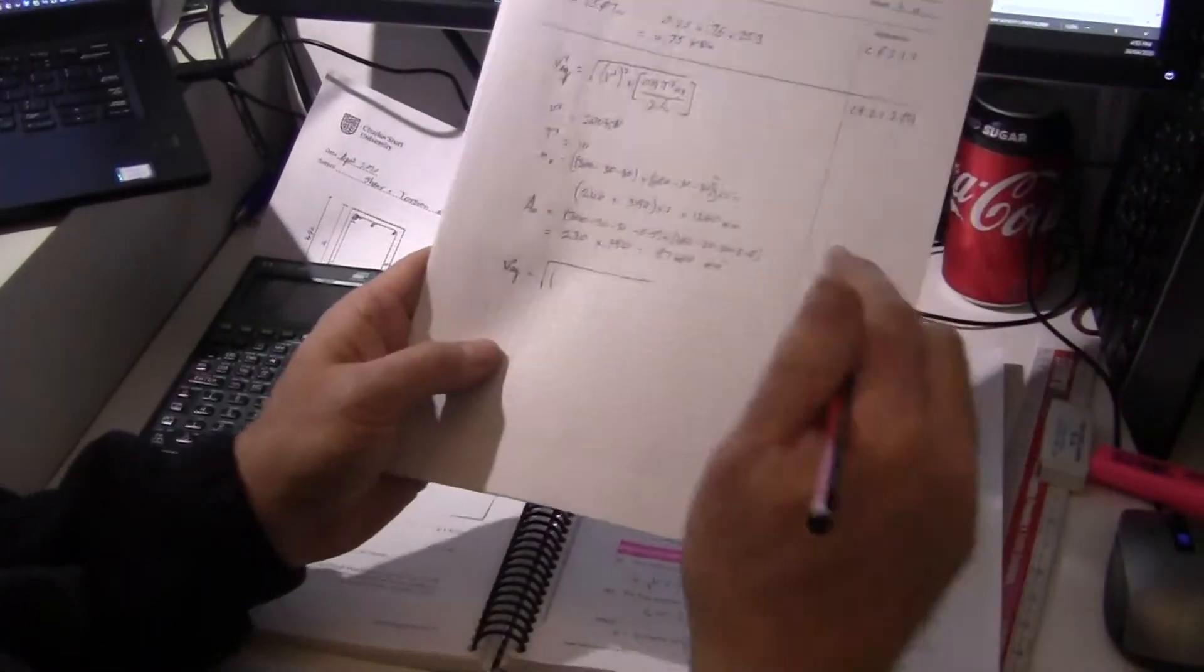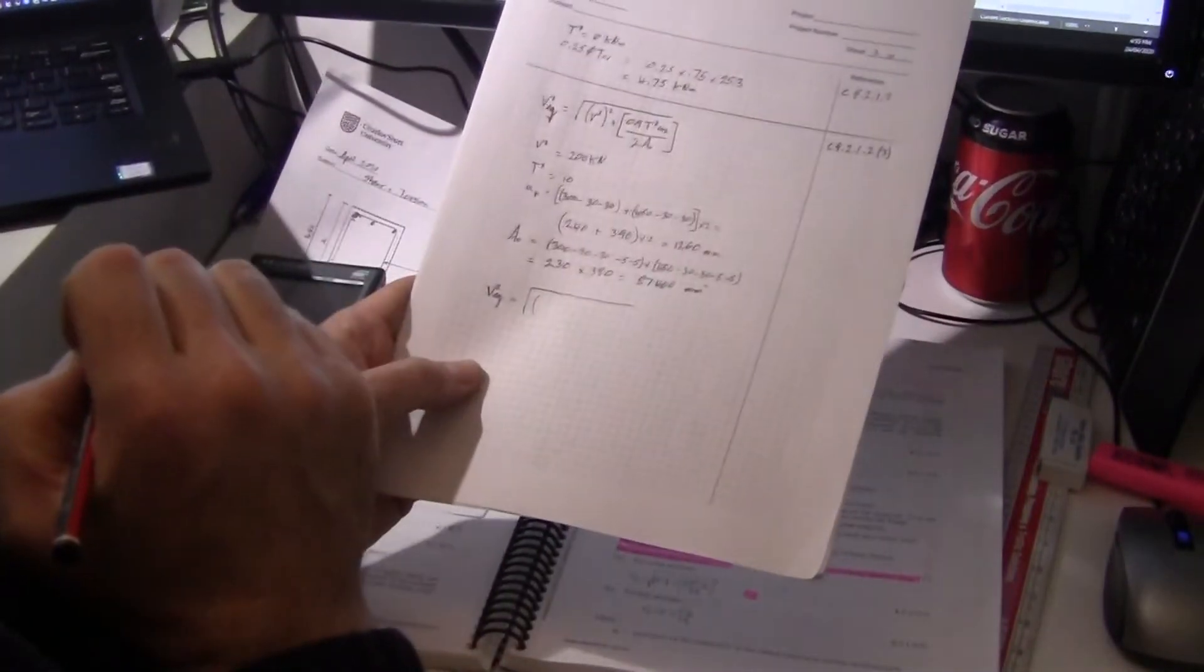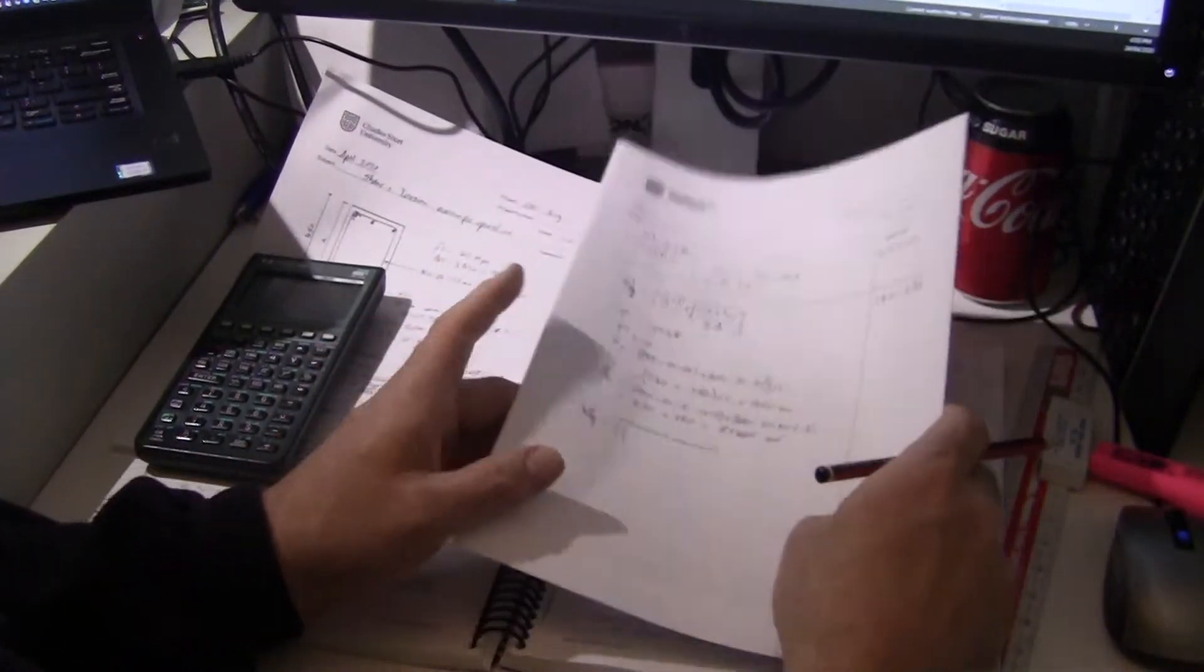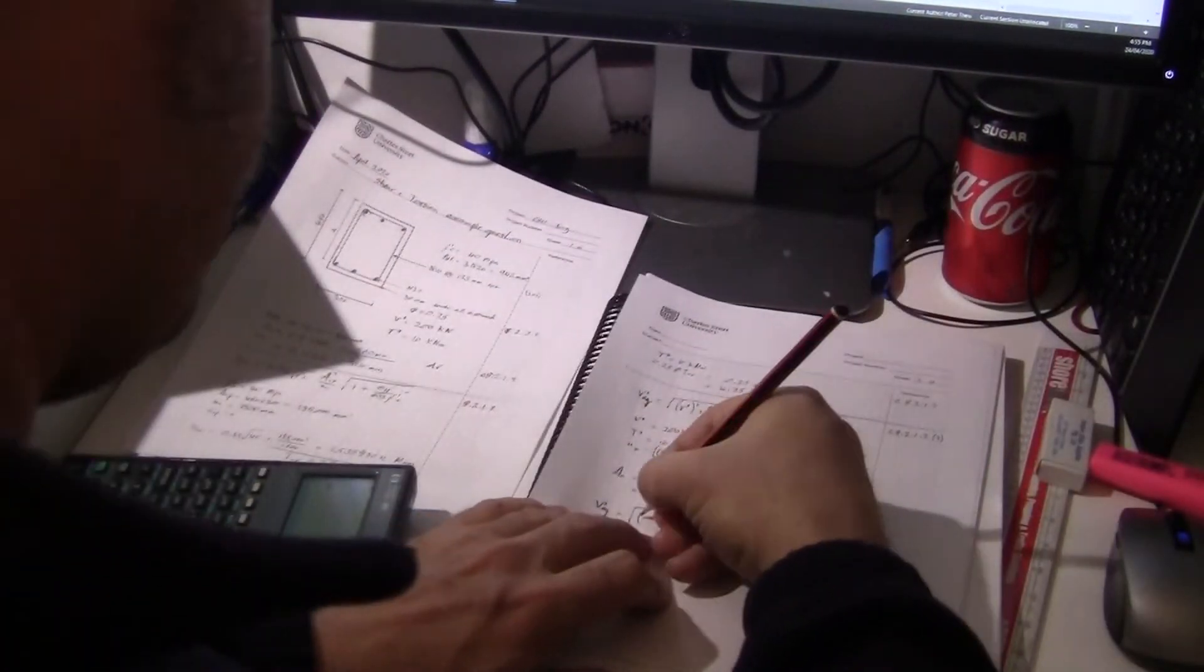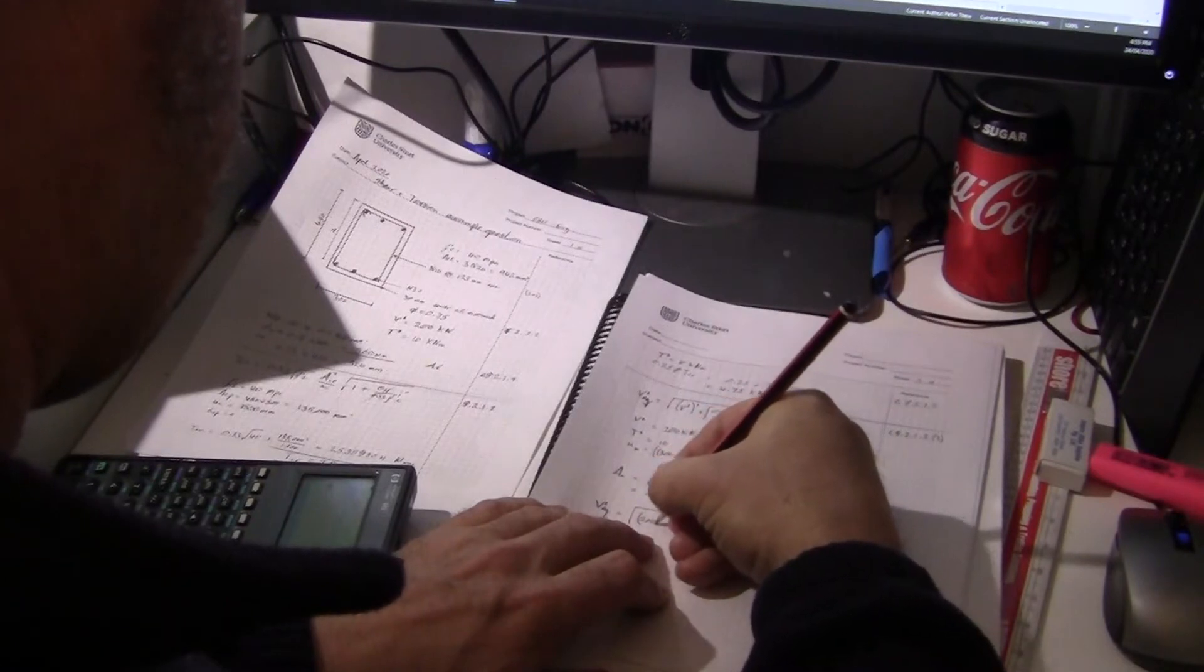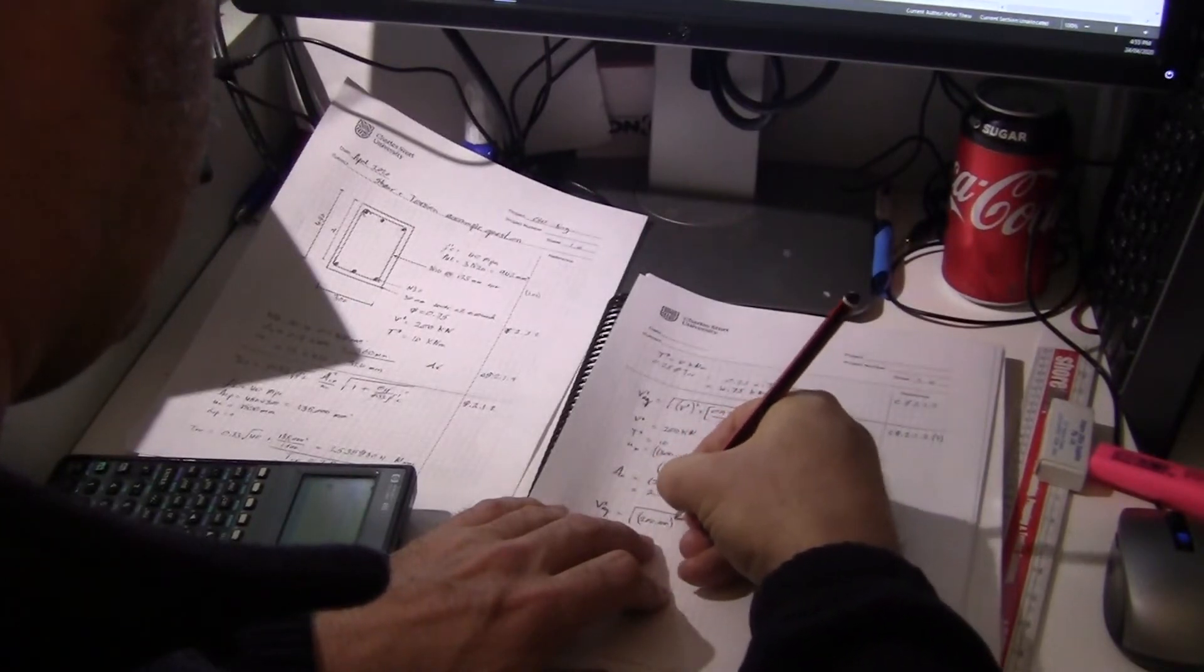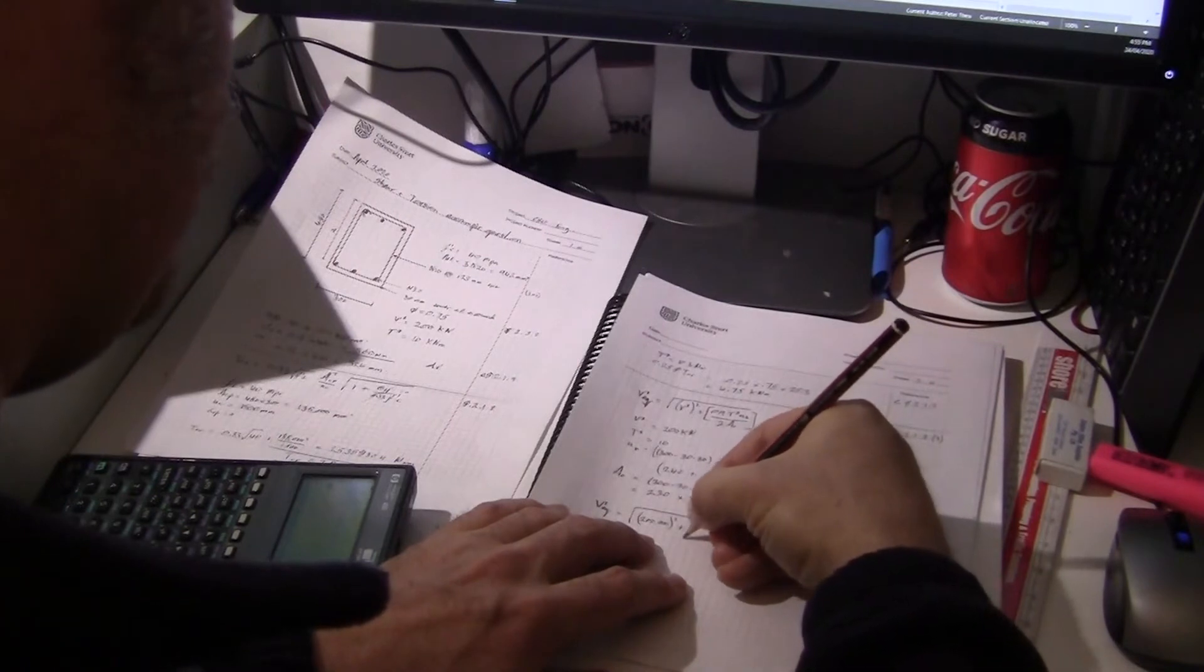So let's put our V in newtons which is 200,000 squared. Hope you like working in big numbers.